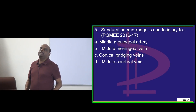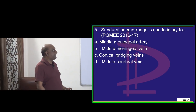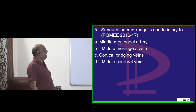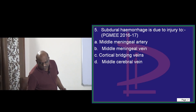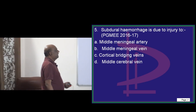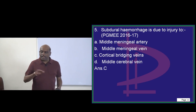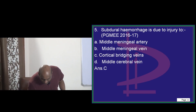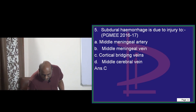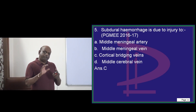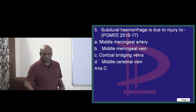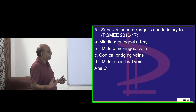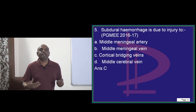Subdural hemorrhage — the NEET PG 2016 question asks: due to injury to what? This is a very important question, question number 5. The answer is cortical bridging veins. Please do not forget. I am happy to see everyone keeping up with the answers — keep punching in the answers, then you will enjoy this entire session.